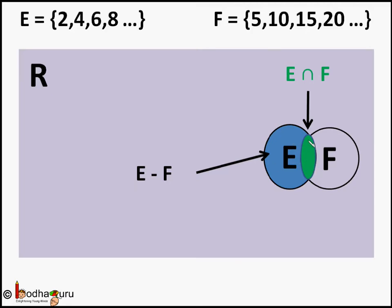So whatever elements left in the set E are those which are even but not multiples of 5. This is represented by the area in dark blue, and this blue area is represented as E minus F.